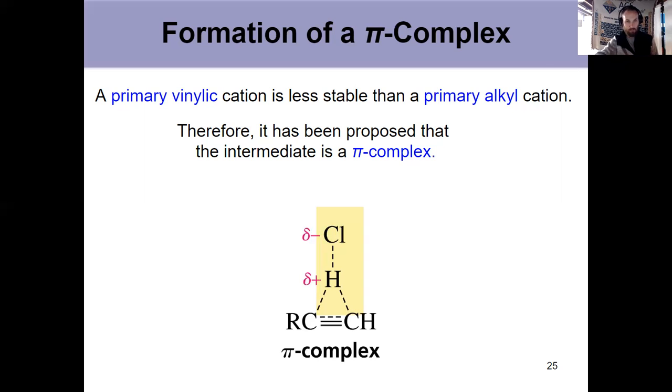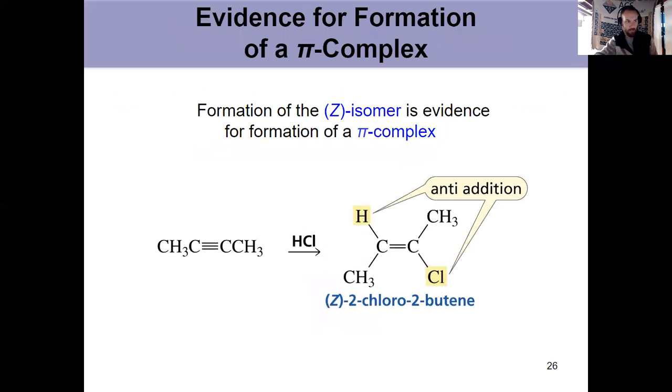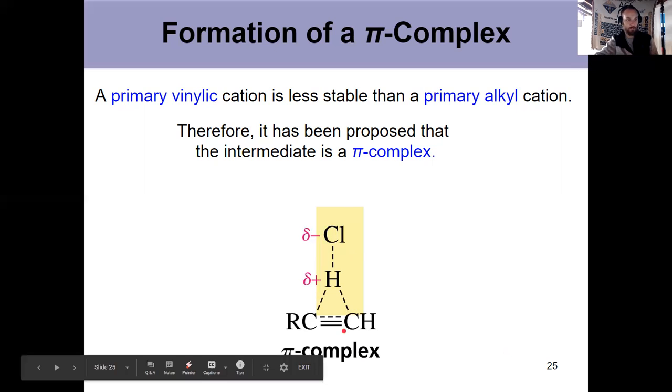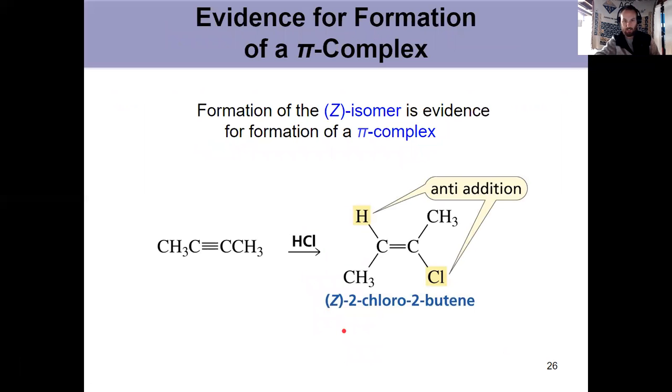What evidence do we have that that actually forms? Well, if I take an alkyne here, it preferentially forms the Z isomer. That's the evidence we have for the pi complex. If I have this pi complex, it's blocking the approach of a nucleophile from both sides. If this didn't exist, it would be a 50-50 shot of E and Z. But if one side is blocking, that means it has to come from one side only, and I'm going to preferentially get the Z isomer via an anti-addition.